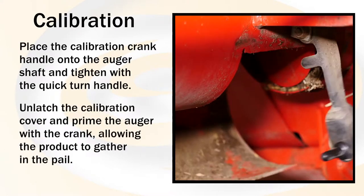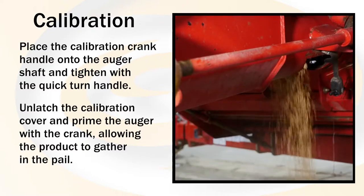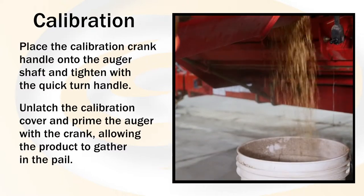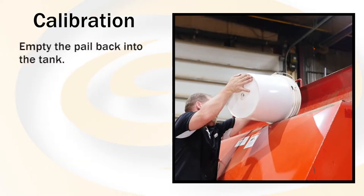Unlatch the calibration cover and prime the auger with the crank allowing the product to gather in the pail. Empty the pail back into the tank.